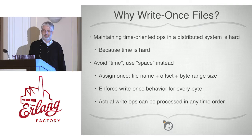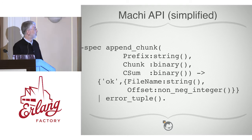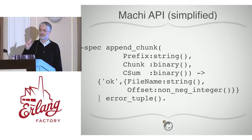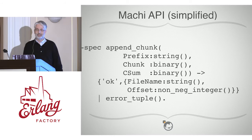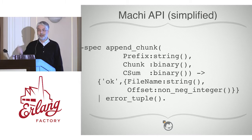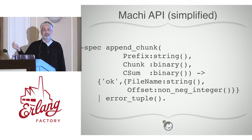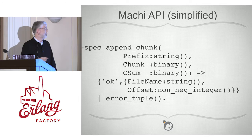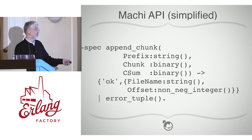Part of the API: the client can specify a prefix string as a hint for organization, the chunk or blob to store, and a checksum — end-to-end checksumming from the client. If the operation succeeds, you're given the full file name and the byte offset of where the first byte of the chunk started. Or you get an error tuple.